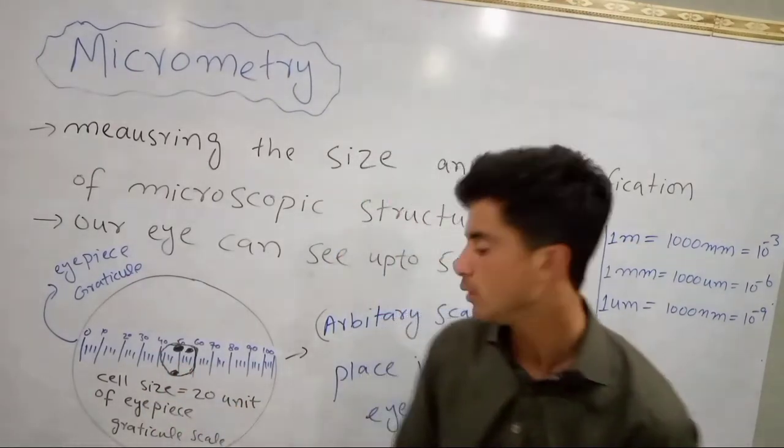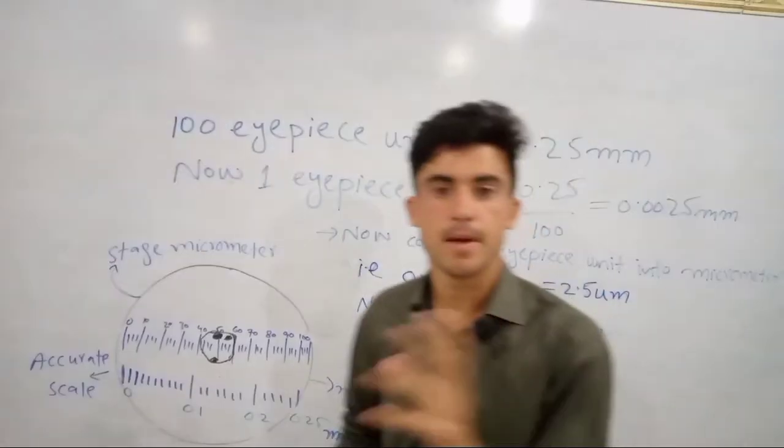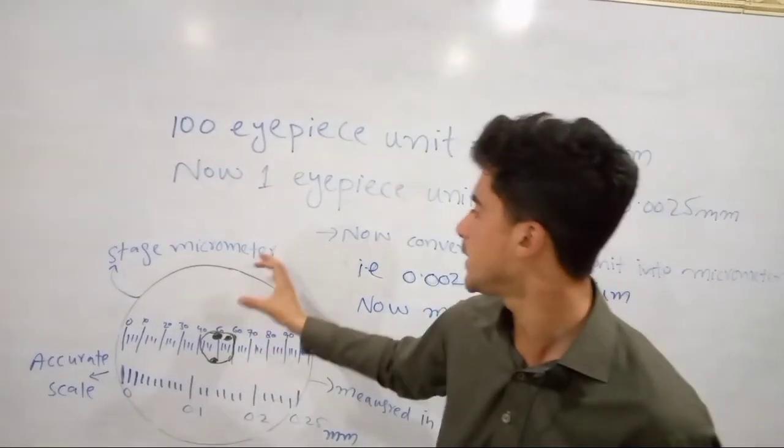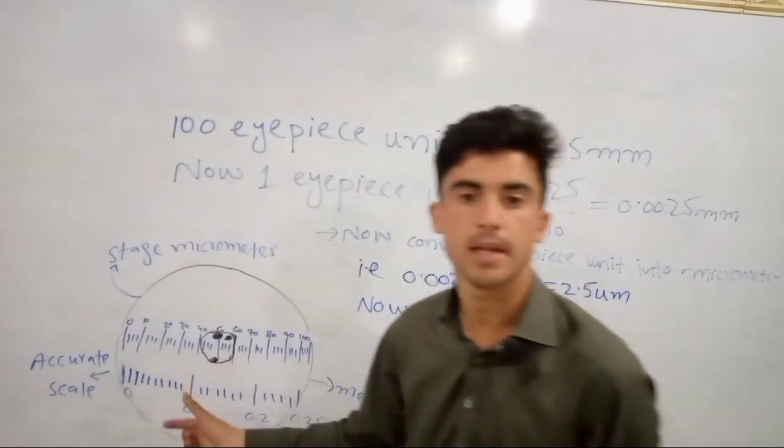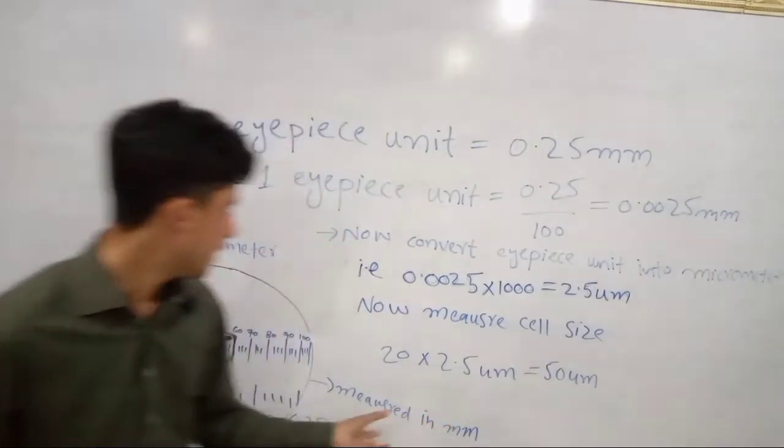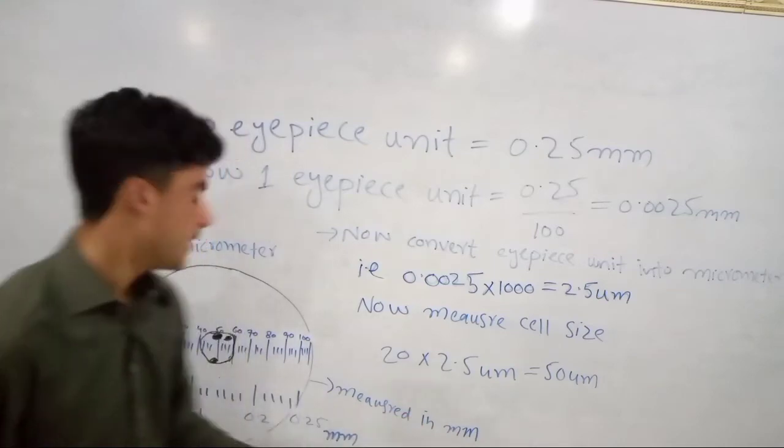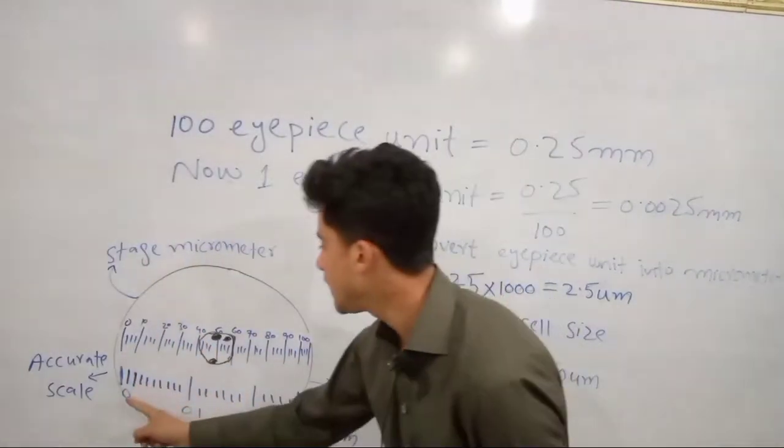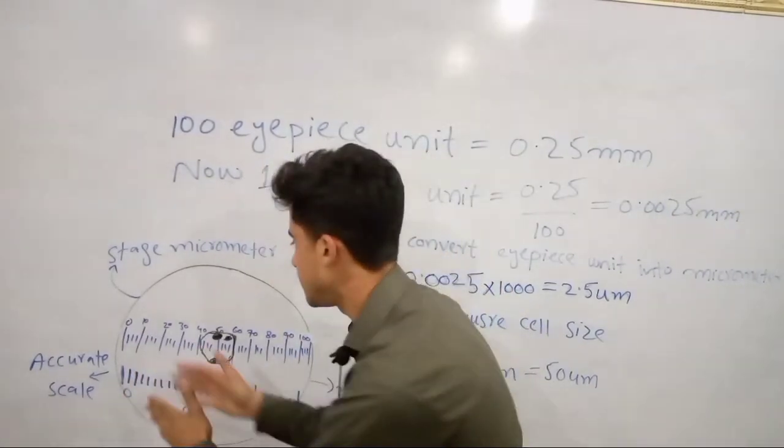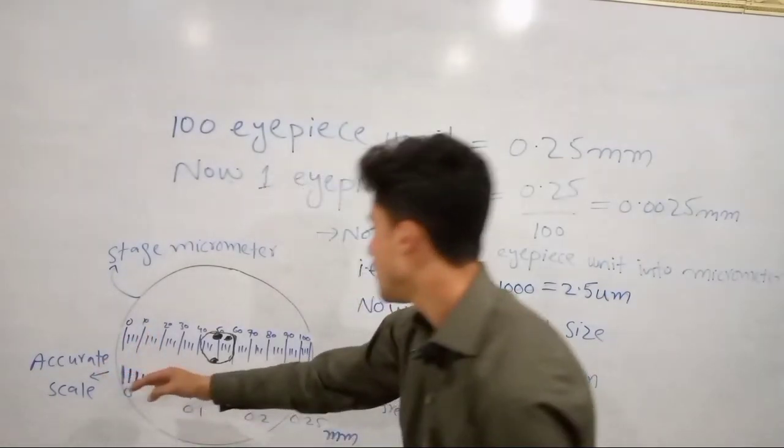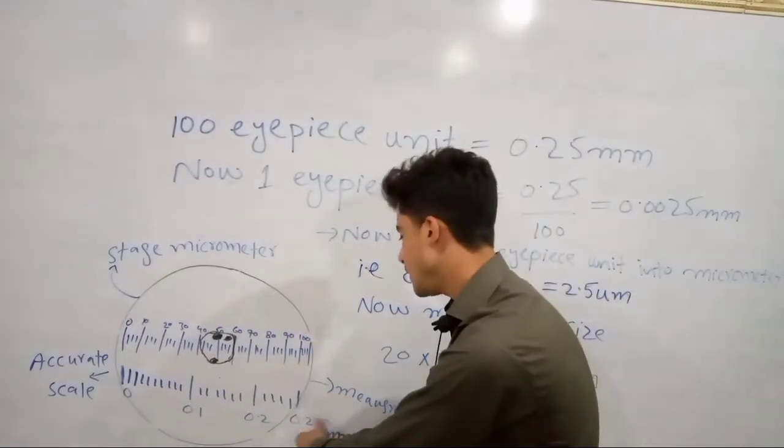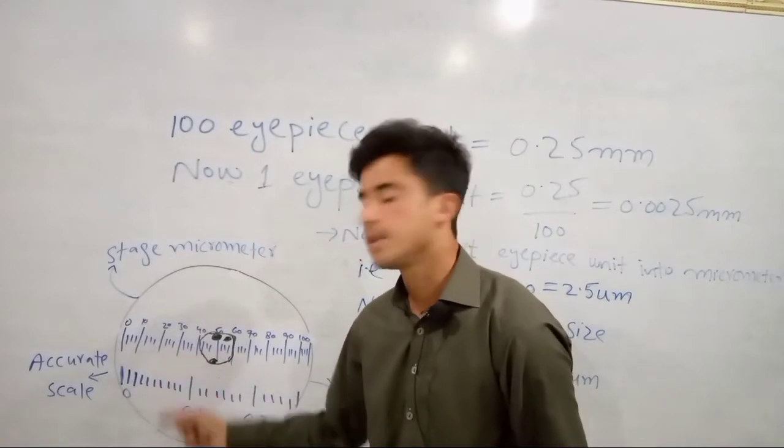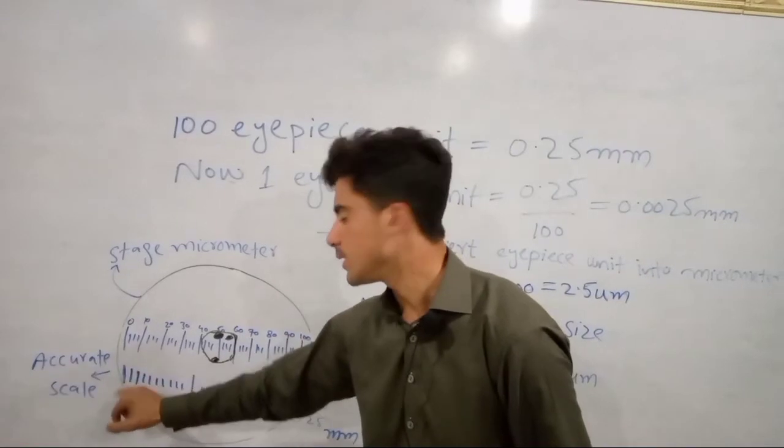Stage micrometer is a stage micrometer with a correct scale. The scale shows divisions at 0.0, 0.5 millimeters, and 1.5 millimeters. If you see the scale, one division is 1.5 millimeters.